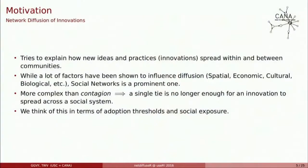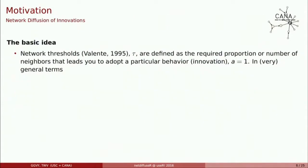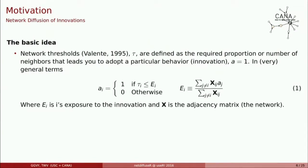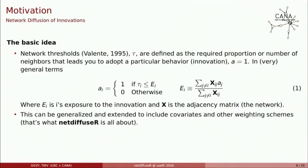You need some other things there. The way we think of this is like exposure and threshold levels. You will adopt at some level depending on how exposed you are to a particular behavior. Each one of us has thresholds, and depending on whether we attain that threshold level by being exposed — meaning how many individuals in your ego network have adopted a particular behavior — you will adopt or not depending on your own threshold. NetDiffuser is focused on that, and you can make it more complex and extend it further.